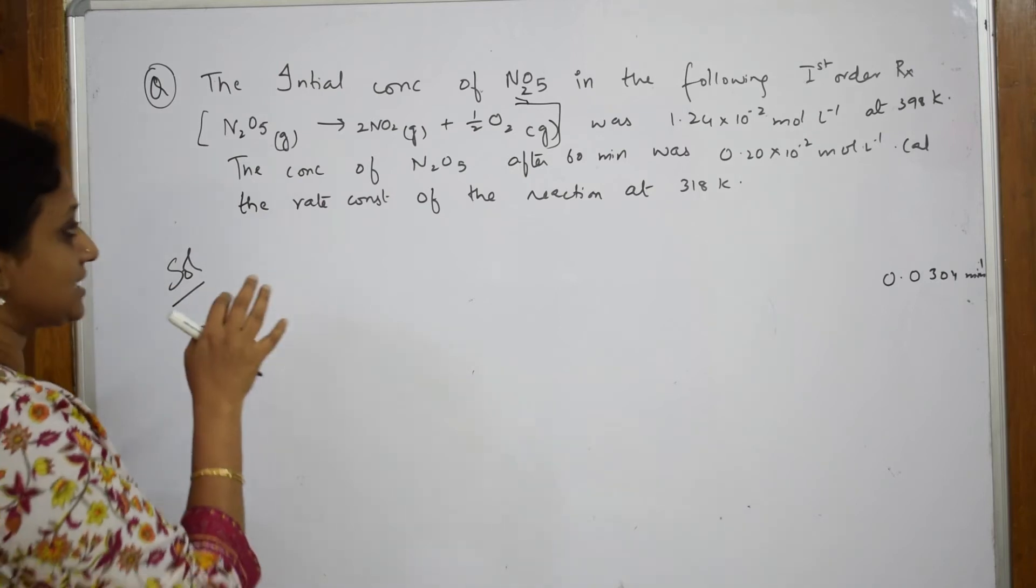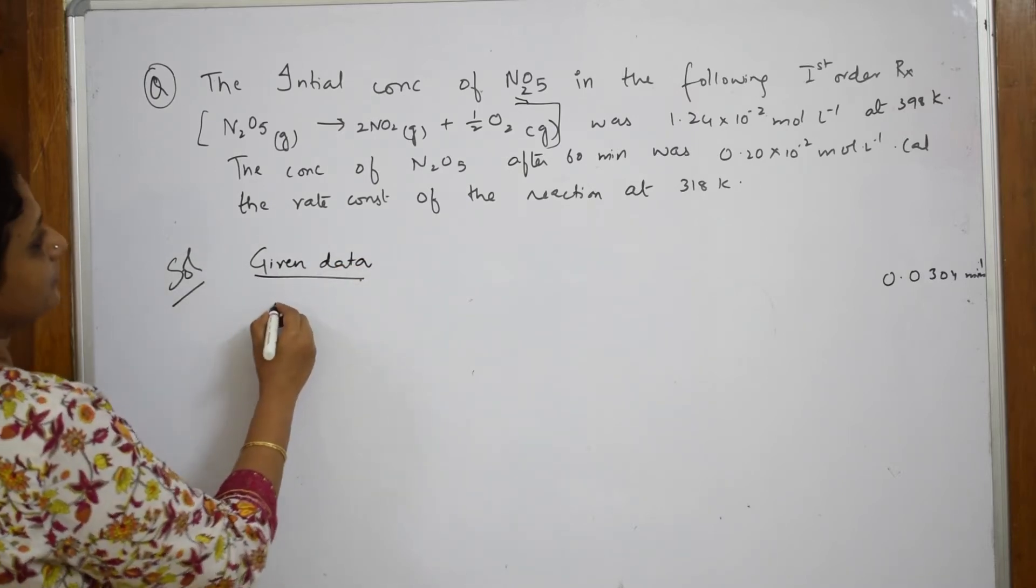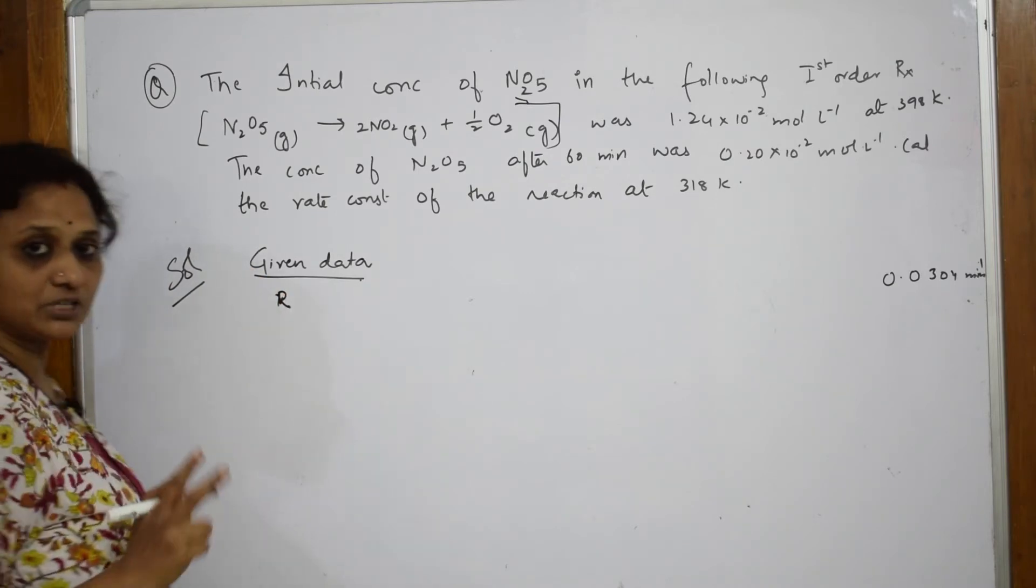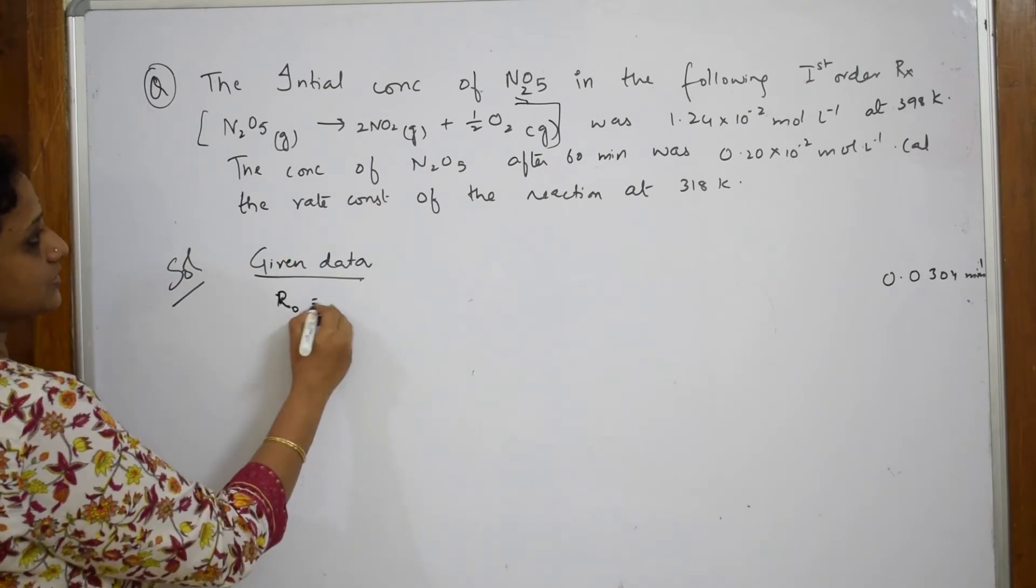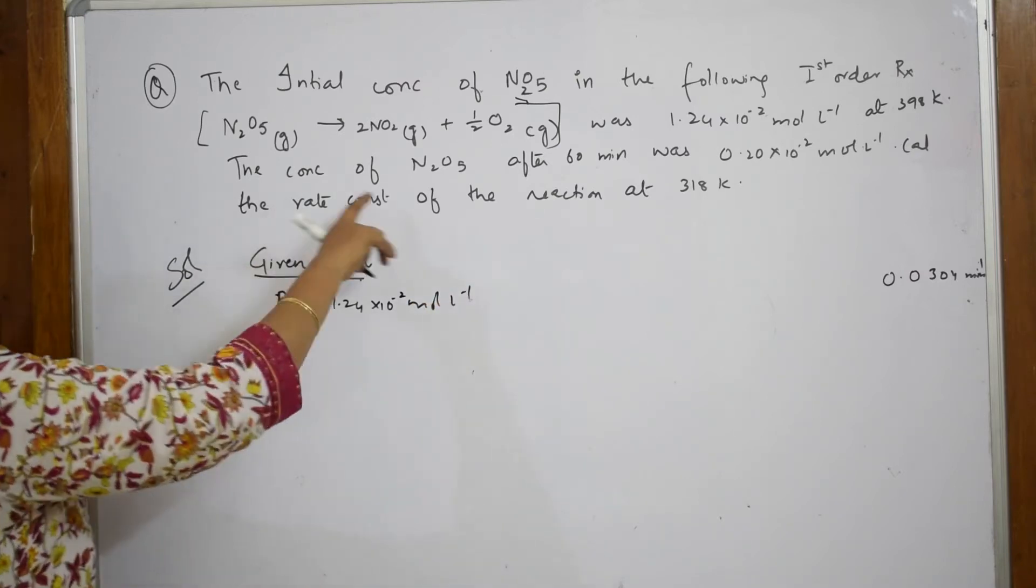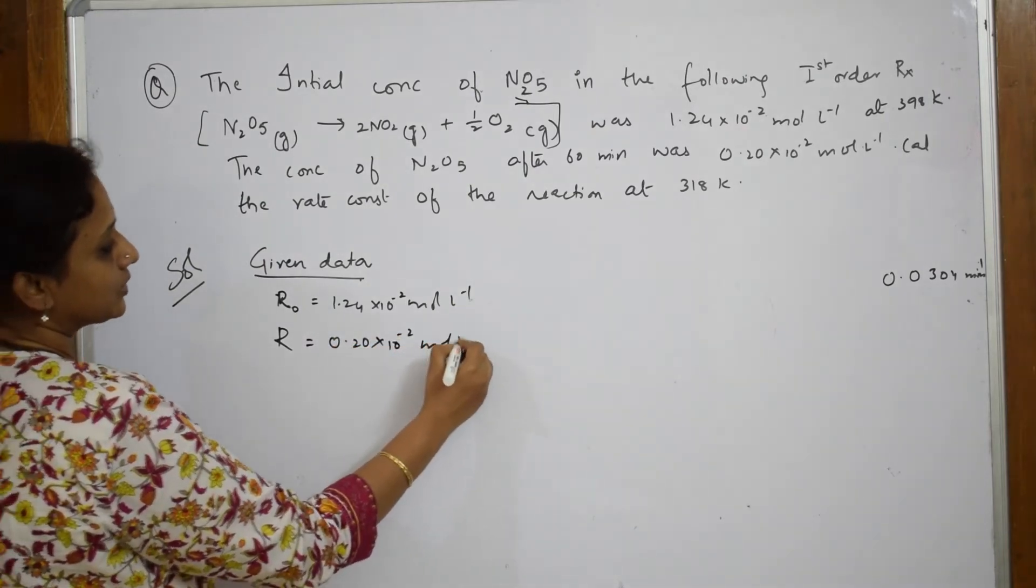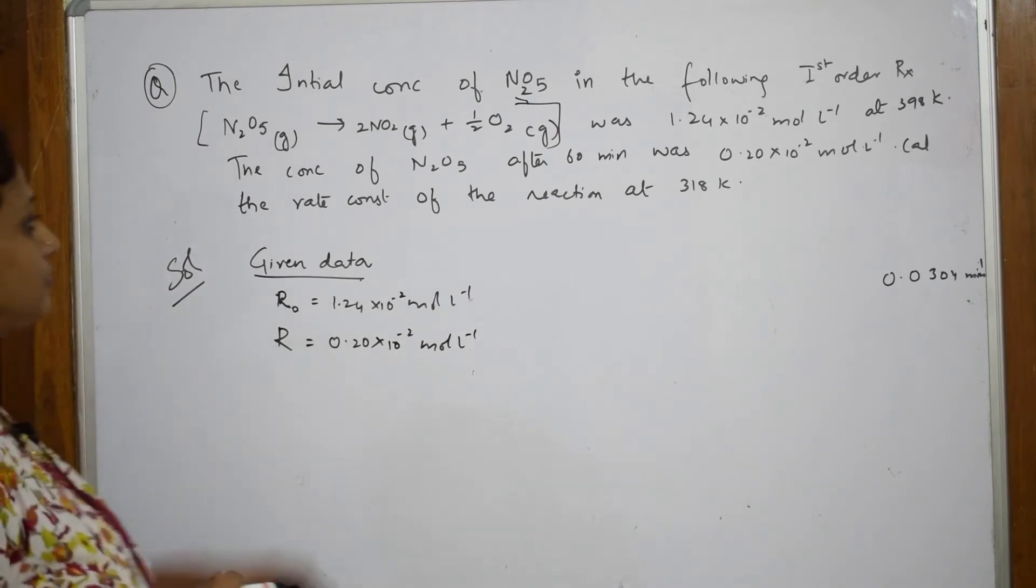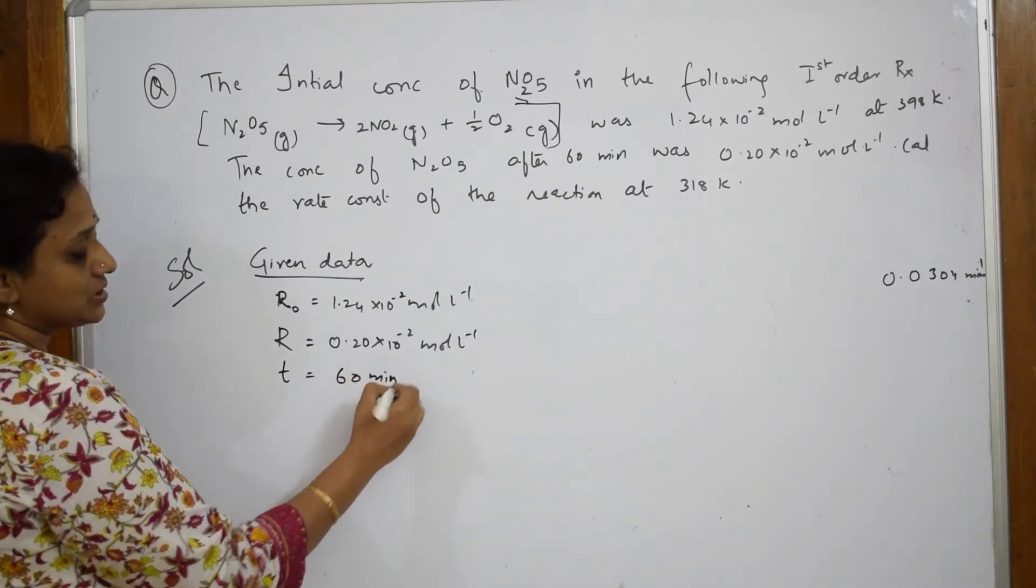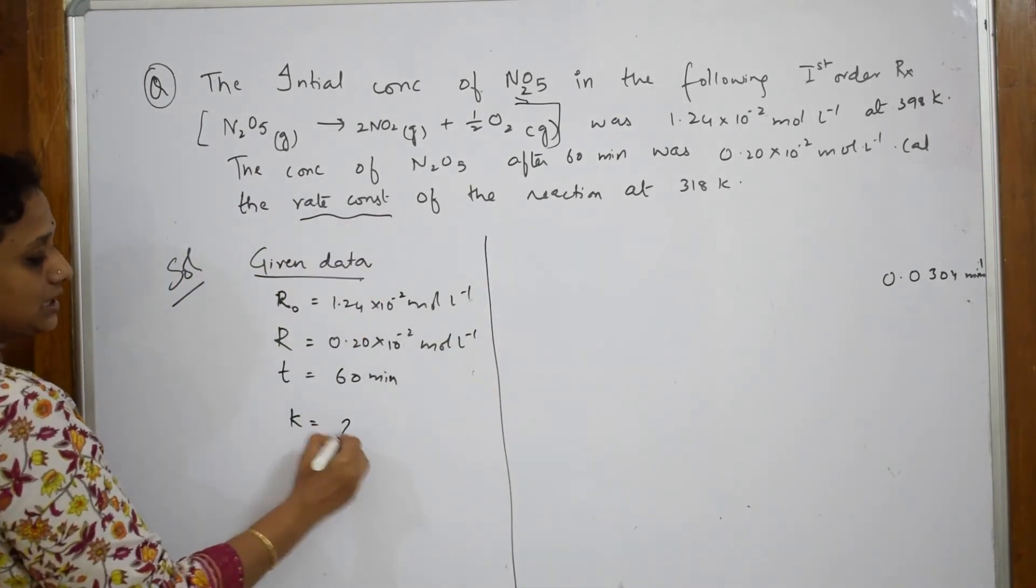Calculate the rate constant of the reaction. What did they give us? Let us write the data given to us. They have given us rate constant, that is your concentration. R₀ value was given to us 1.24 into 10 raised to minus 2 molar liter inverse and the concentration after 60 minutes. Later stages it was 0.20 into 10 raised to minus 2 molar liter. Then they have given me time T is equal to 60 minutes. What should I find out? I have to find out rate constant k.